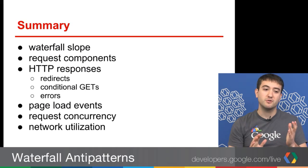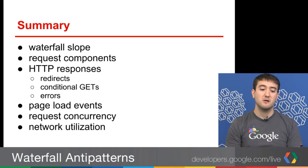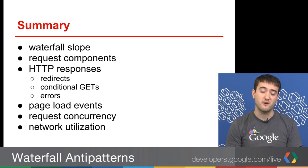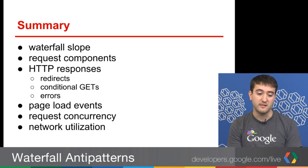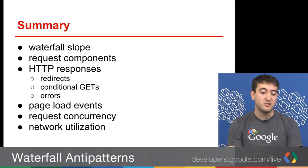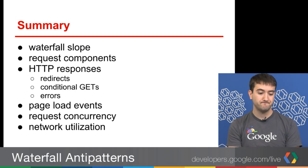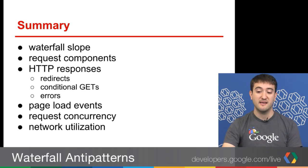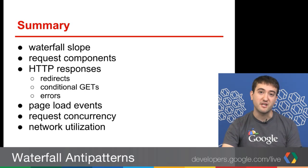In summary, we looked at waterfall slope and how following the left edge of all these requests could give us a high-level idea of the performance of our page. We looked at the individual request components from DNS lookup to content download. We looked at three different HTTP responses: the redirects, the conditional GETs, and the errors. We looked at the page load events and all those colors and how that relates to the Navigation Timing API. We looked at request concurrency and how that can contribute to the stair-step pattern. And finally, network utilization — we want to do as much with the network when it's available as we could.